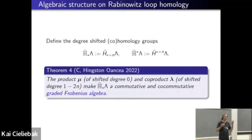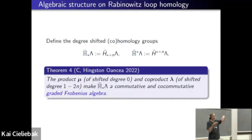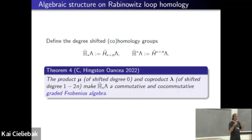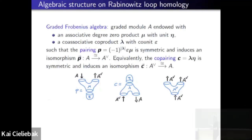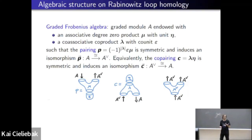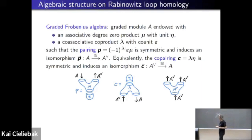A Frobenius algebra is usually equivalent to a two-dimensional TQFT. In the graded setting you can still write down all the same relations with appropriate signs. In our case, the product and coproduct have opposite parity, whereas usually for a Frobenius algebra they have the same parity — but that's the only difference. A graded Frobenius algebra involves a product and a coproduct; the product should have a unit, the coproduct should have a counit ε. If you attach the counit to the output of the product, you get a pairing — and that pairing is a perfect pairing, inducing an isomorphism between the space and its dual. Likewise you get a copairing inducing the inverse isomorphism.